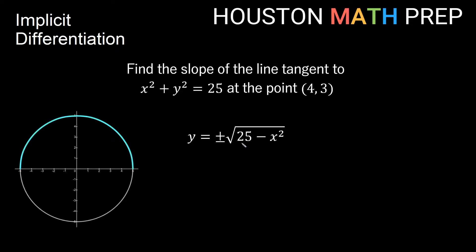The positive version of the root — just regular root of 25 minus x squared — is the upper half of the circle, and the negative root, negative square root of 25 minus x squared, is the lower half of the circle. So we get an upper semicircle and a lower semicircle depending on which version of the root we're using. Once I've solved this, I have to think about which function I'm going to use. Which one goes through (4, 3)? It's actually the upper semicircle, so I would use the positive version of this root, take the derivative, and plug in my point to get my slope. That's a little tedious, so instead we'll use implicit differentiation.